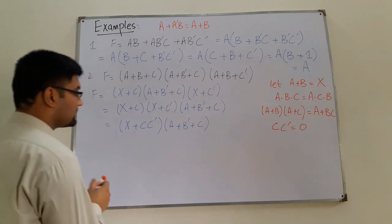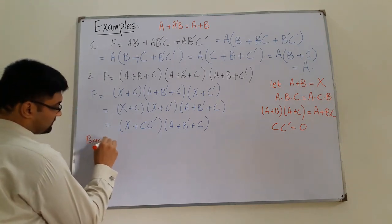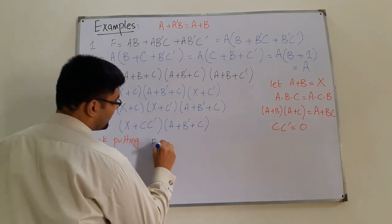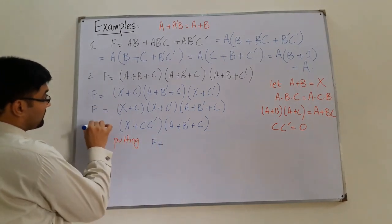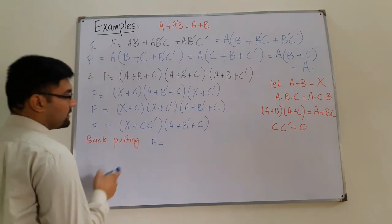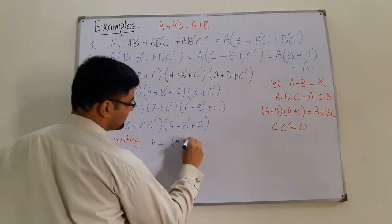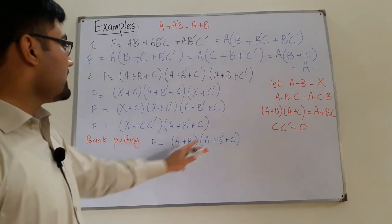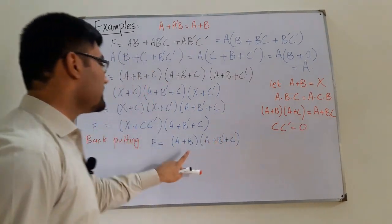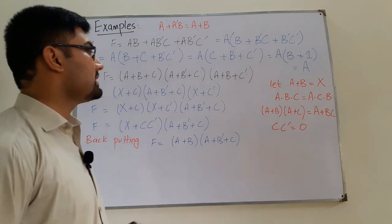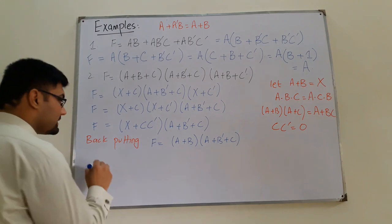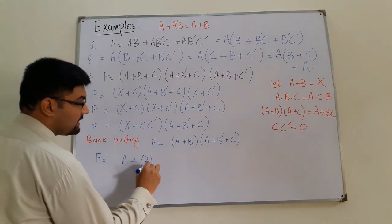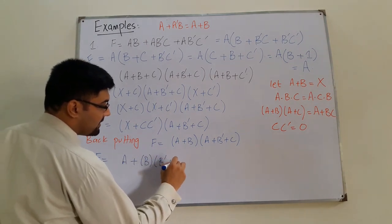Back-substituting X = A+B, we get f = (A+B)(A+B'+C). Applying the identity (A+B)(A+C) = A+BC again, where B is B and C is B'+C, we can write the function as A + B(B'+C).